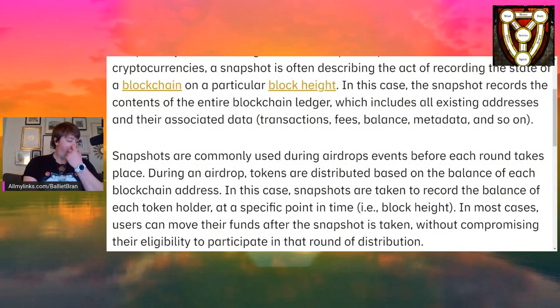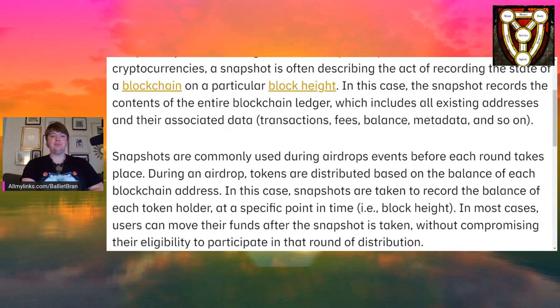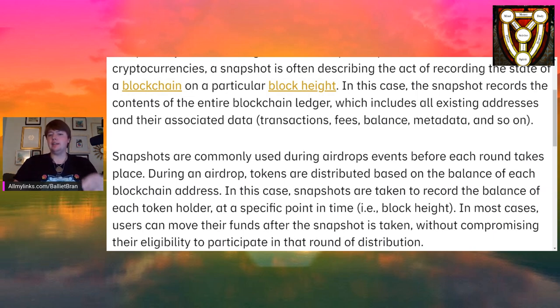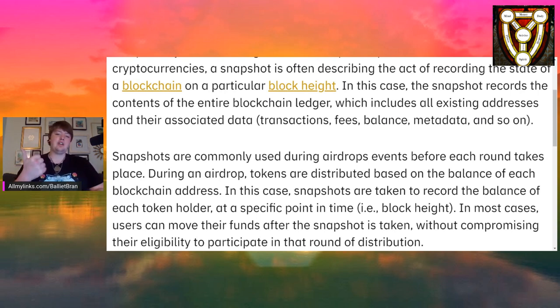This is from Binance Academy, and it does a really good job of describing what it is. So it says: in cryptocurrencies, a snapshot is often describing the act of recording the system state of a blockchain on a particular block height. In this case, the snapshot records the contents of the entire blockchain ledger, which includes all existing addresses and their associated data — transactions, fees, balance, metadata, and so on.